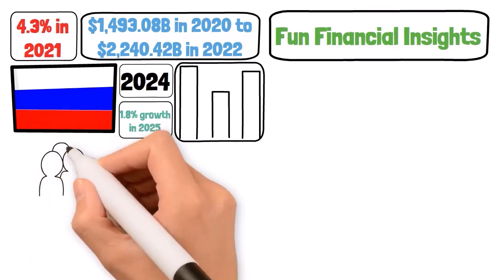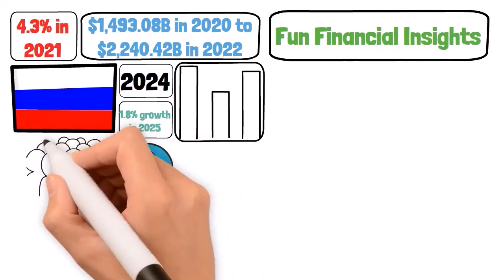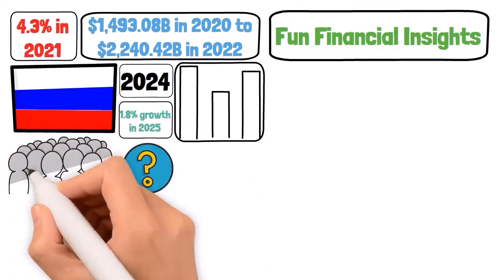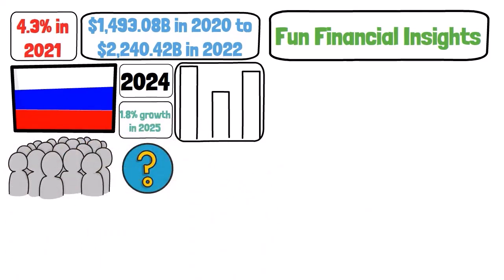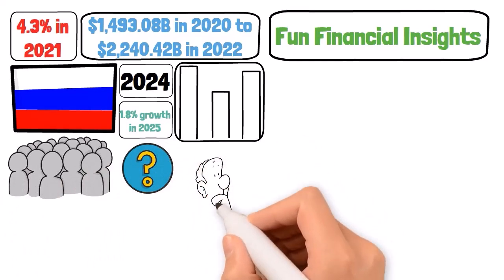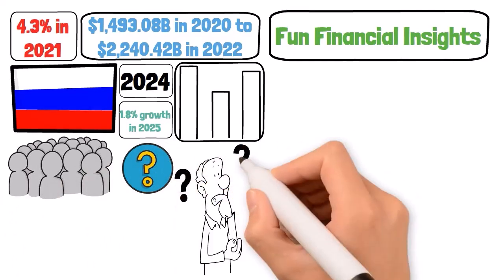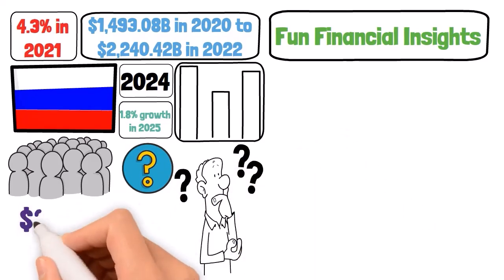In today's episode, we're setting our sights on Russia, a nation wrapped in sanctions and geopolitical intrigue. With a history rich in economic resilience and strategy, what does the crystal ball reveal about Russia's financial landscape in the next five years?